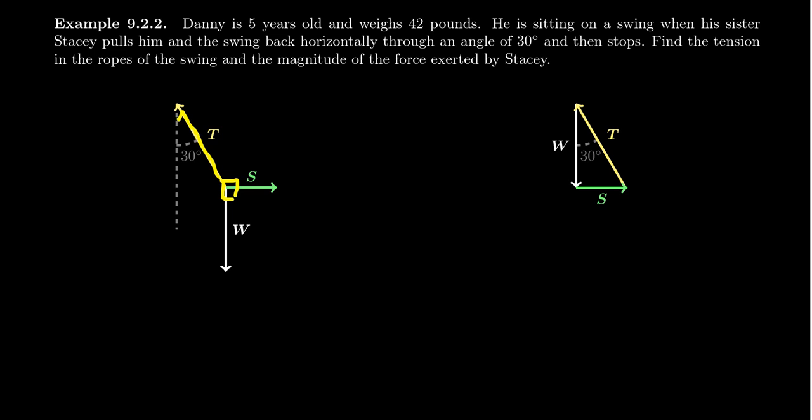So we have the rope of the swing. We have the sister pulling, holding the boy up, and then he has his weight. So there are these three vectors. These three forces are acting on Danny all at the same time. So gravity pushes him down. Stacy's pulling him to the side. But the rope is also pulling him back towards the swing set. But he's not moving.